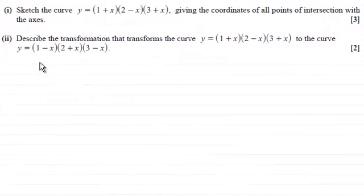Hi there. Now for this question, part 1, we're asked to sketch the curve y equals (1 + x)(2 - x)(3 + x), giving the coordinates of all points of intersection with the axes for three marks.